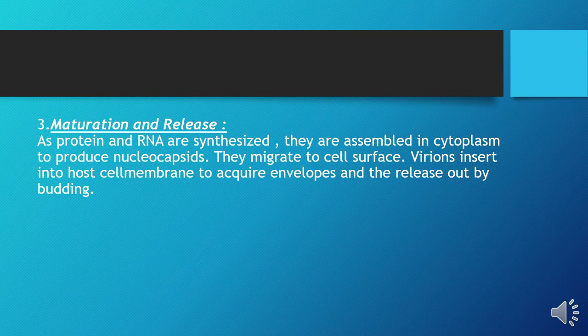Last step: maturation and release. Jaise hi viral proteins aur RNA synthesize ho jaye nge, yeh cytoplasm mein ja kar assemble ho jaye nge nucleocapsid banane ke liye. Phir yeh cell surface ki taraf migrate kar jaye nge, aur virion host cell membrane ke andar insert ho jaye ga envelope hasil karne ke liye. Aur jaise hi envelope acquire ho gaya, yeh budding ke procedure se host cell se bahar nikal jaye nge. So this is the complete process of etiology of measles virus.